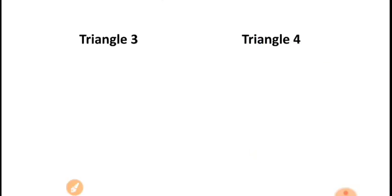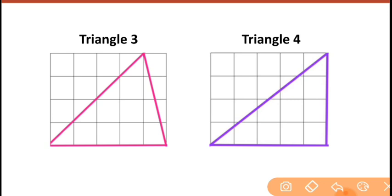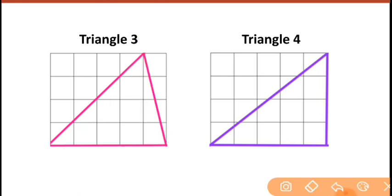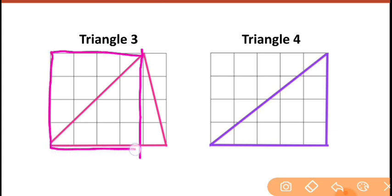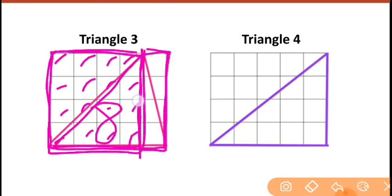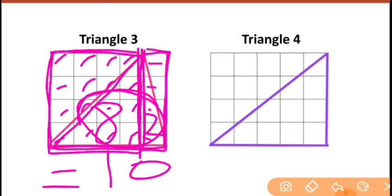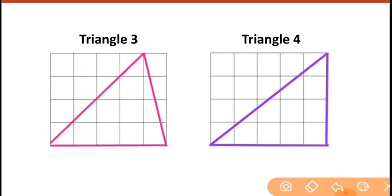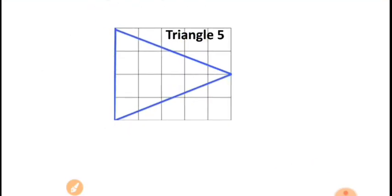Every time it will be 10. Look at another example — draw a line in the middle here. This is the first part of the triangle and the second part. The first part has 16 squares, so half of 16 is 8. The second part has 4 squares, and half of 4 is 2. So 8 plus 2 is 10. Every time you will get 10 square centimeters. There is no magic — it's just the concept.